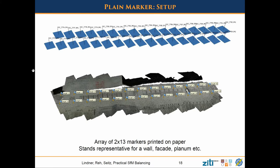We also wanted a well-controlled lab example. We have two pieces of paper glued together quite precisely with 26 markers, and we took many pictures with the robot arm so they are really precisely and accurately spaced. This can represent something like a wall or facade you're trying to reconstruct. We wanted to see how the number of markers chosen propagates the error.